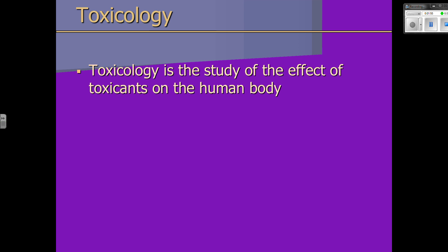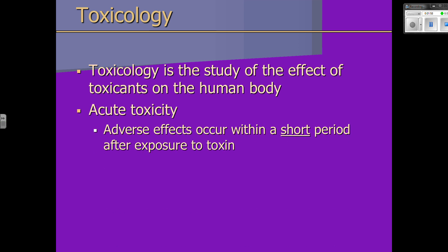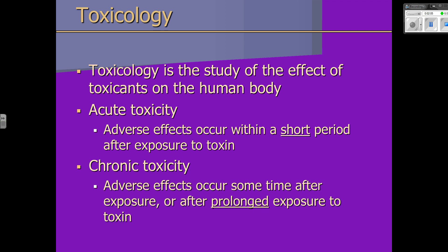We look at toxicology in two different ways — we study acute toxicity and chronic toxicity. We like to see how chemicals can affect us in the short term, which would be acute, and also how they can affect our health in the long term, which would be chronic. Acute toxicity involves adverse effects that occur within a short period of time after exposure. Chronic toxicity is when we study the effects over a prolonged period of time, with repeated exposure.